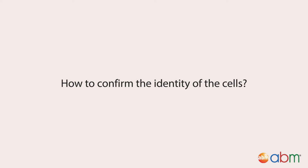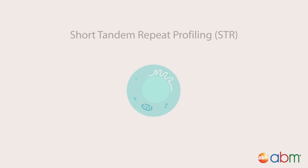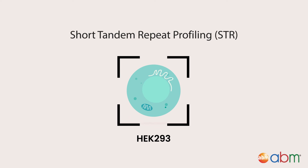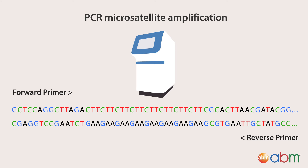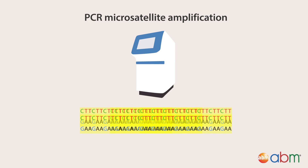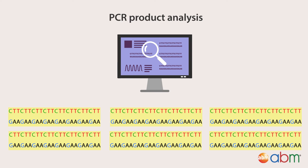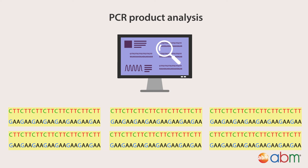In order to confirm the identity of the cells you are working with, short tandem repeat profiling, or STR for short, can be performed on the cells to verify their origins. STR utilizes PCR to amplify a microsatellite region on the DNA sample that is unique to a certain species. The PCR products are then analyzed with software that compares the microsatellite sequence to a database, which is able to confirm the identity of the species with high certainty.